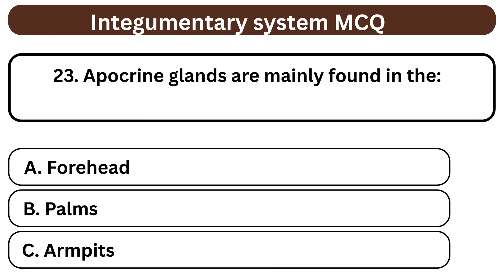Question 23. Apocrine glands are mainly found in the A. Forehead. B. Palms. C. Armpits. The answer is C. Armpits.